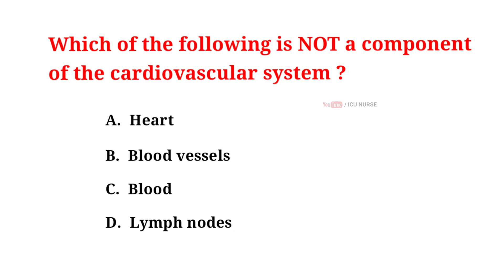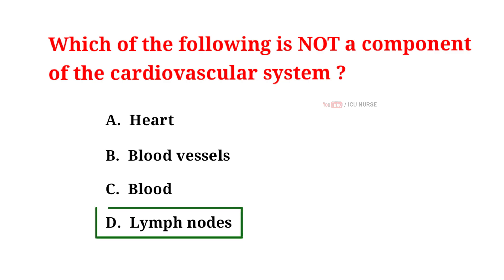Which of the following is not a component of the cardiovascular system? A. Heart. B. Blood vessels. C. Blood. D. Lymph nodes. And the correct answer is D: lymph nodes.